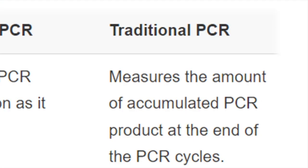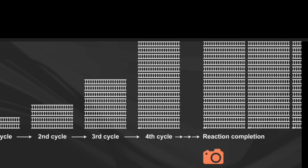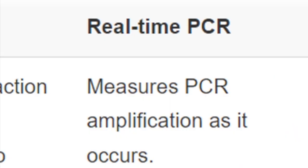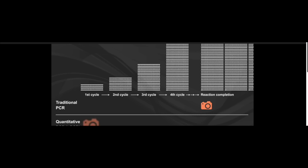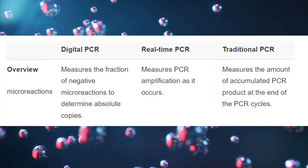With traditional PCR, you just measure the amount of accumulated PCR at the end of each cycle. With real-time PCR, you're measuring the PCR amplification as it occurs. With digital PCR, we are measuring the fraction of the negative micro-reactions to determine the absolute copies.